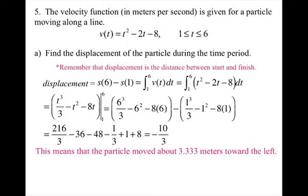This means that the particle moved about 3.3 repeating meters towards the left. Yes, I know it doesn't make sense for distance to be negative, but in this case, distance isn't negative. That sign is telling you the direction in which it's moving. It moved towards the left.